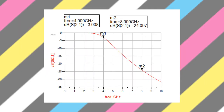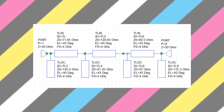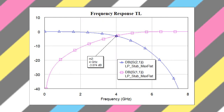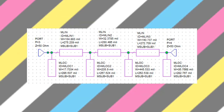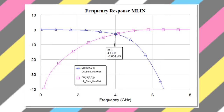This is the simulated gain and return loss for the low-pass prototype. Next, we designed the low-pass filter with ideal transmission line TLIN in Microwave Office. This is the simulated gain and return loss for the ideal transmission line. We then replaced the ideal transmission line with the microstrip element MLIN, and this is the simulated gain and return loss for the microstrip low-pass filter.